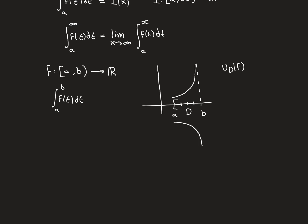For a function unbounded above, it's just the upper Riemann sums that have problems — the lower Riemann sums are absolutely fine. For that last subinterval, the infimum exists: since we defined the function to be zero at b, the infimum ends up being zero. So there are no problems defining the lower Riemann sums for a function unbounded in the positive direction.